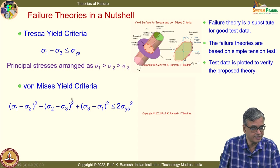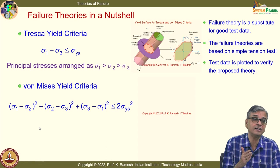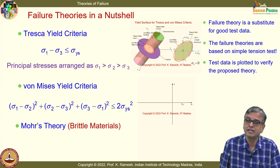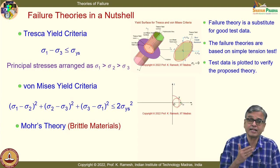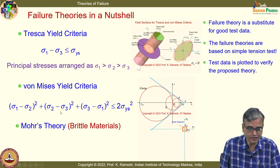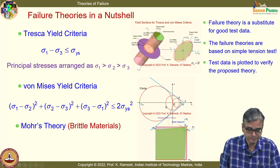For brittle materials, because they have very different tensile and compressive yield strengths — very strong in compression — you have a failure locus modified by several people. Initially developed by Coulomb, modified by Mohr, and then modified by Griffith, as shown here. You have to use principal stresses very effectively to verify whether a material will fail — whether brittle or ductile.